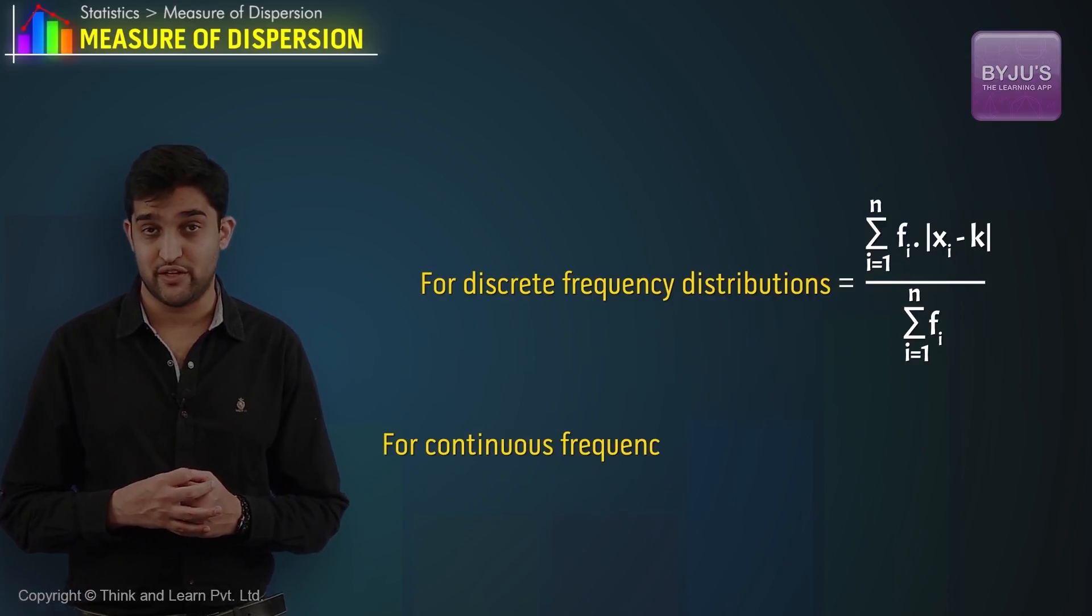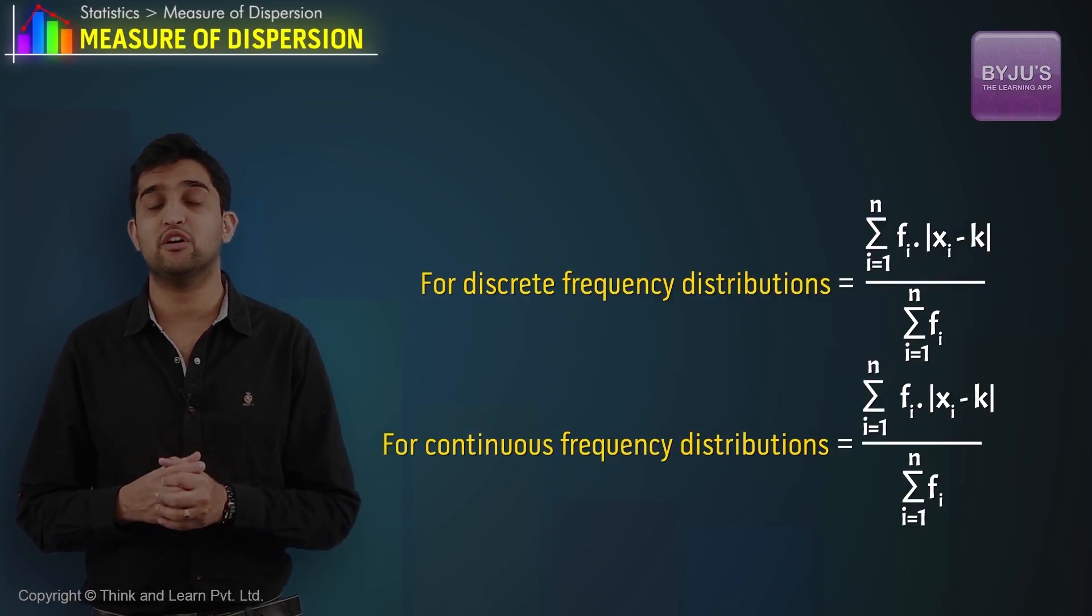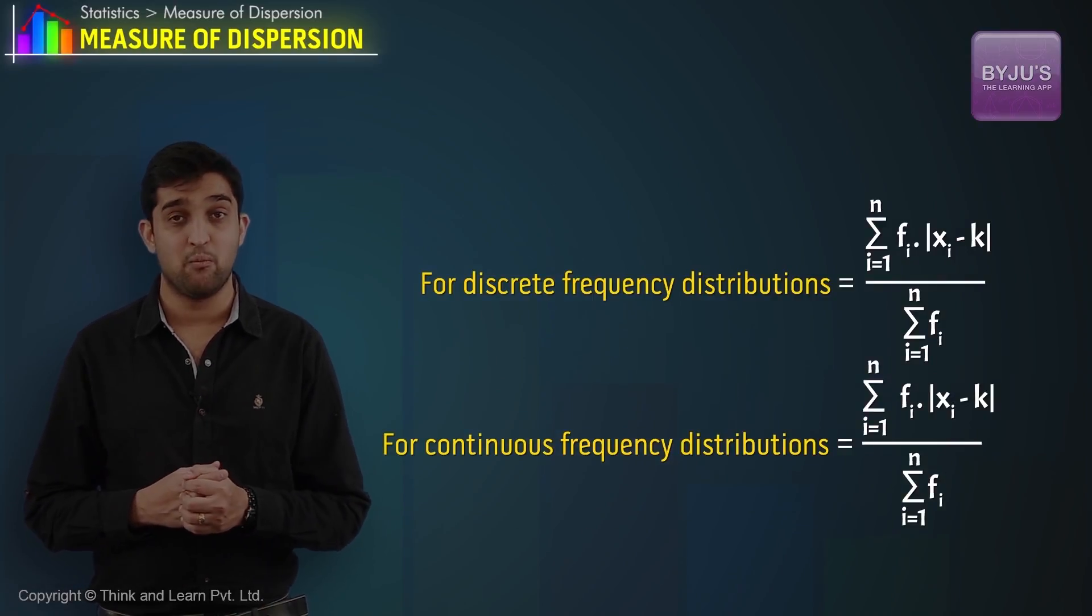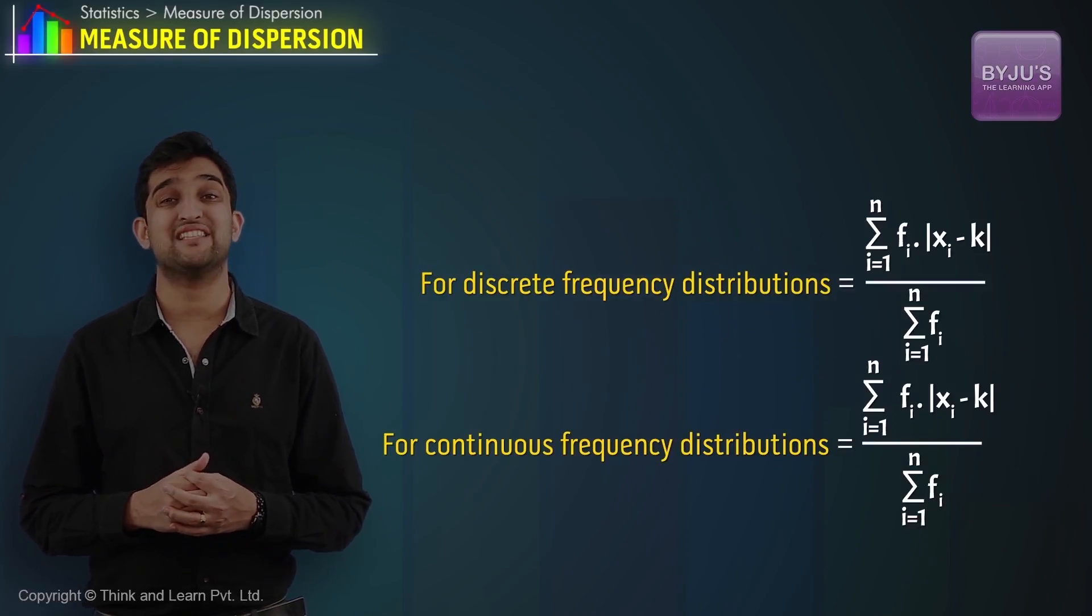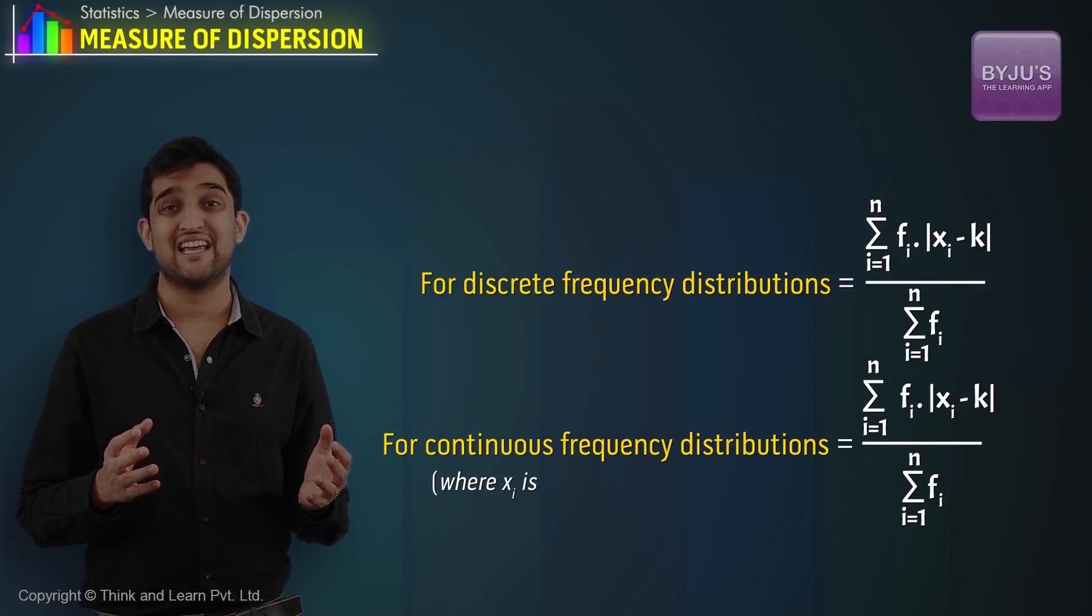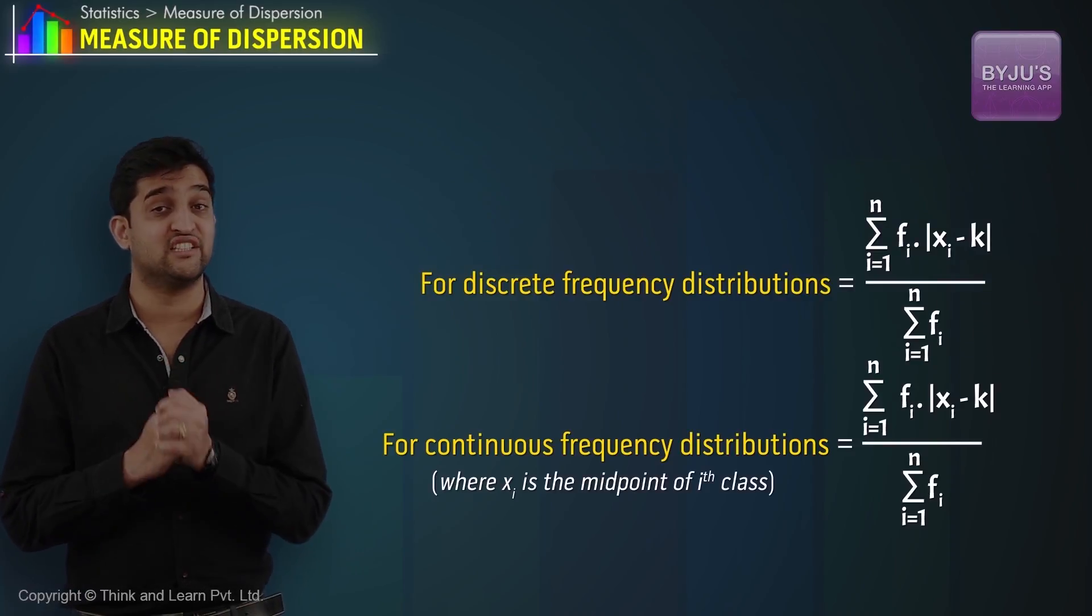While for a continuous frequency distribution, the expression will work out to summation fi|xi-k| divided by summation fi, where xi is the midpoint of the ith class.